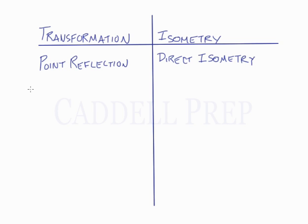A translation is simply sliding the shape or the original image in some direction. And it also has direct isometry.